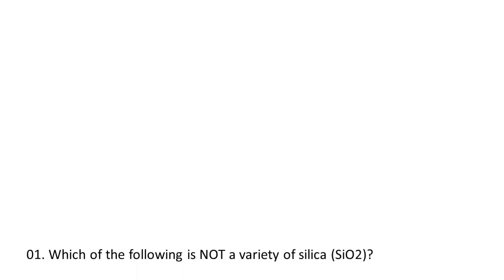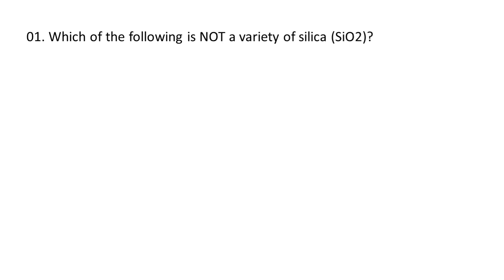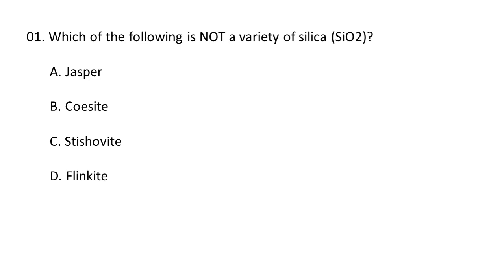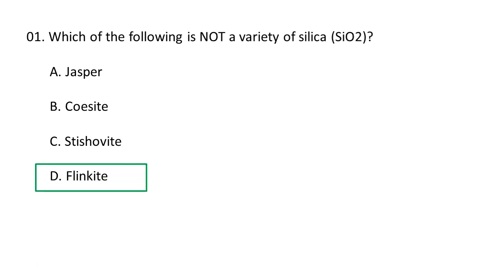Coming to the first question: Which of the following is not a variety of silica? The choices are A. Jasper, B. Coesite, C. Stishovite, D. Flinkite. So obviously D. Flinkite is not a variety of silica, because Jasper, Coesite and Stishovite all are varieties of silica.